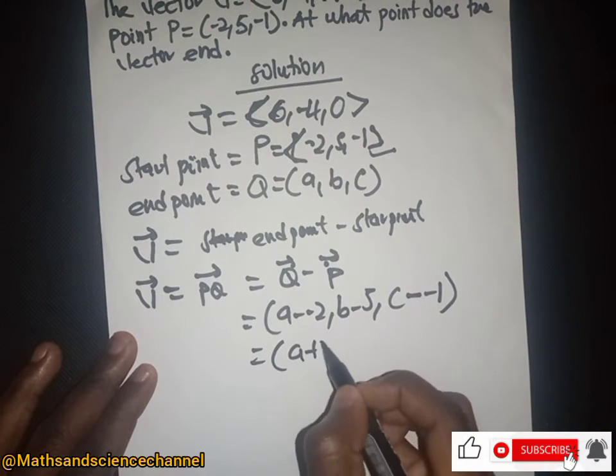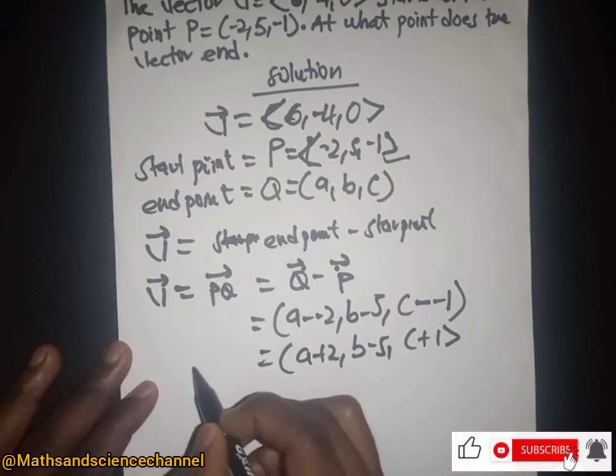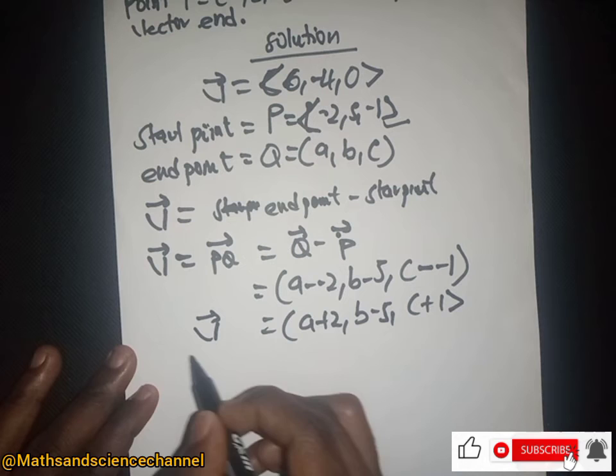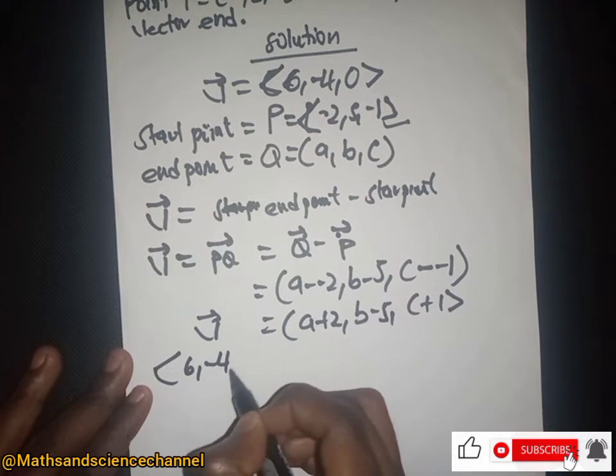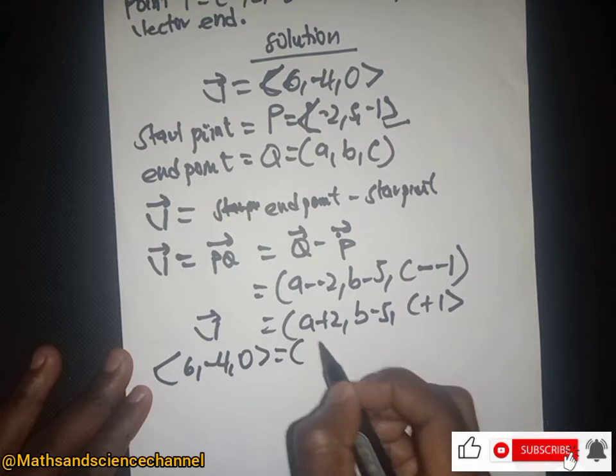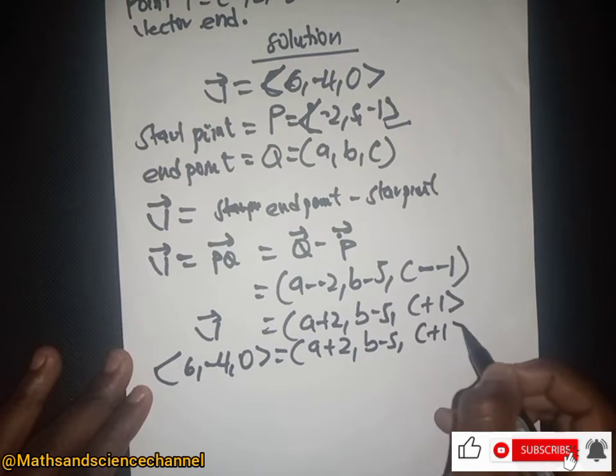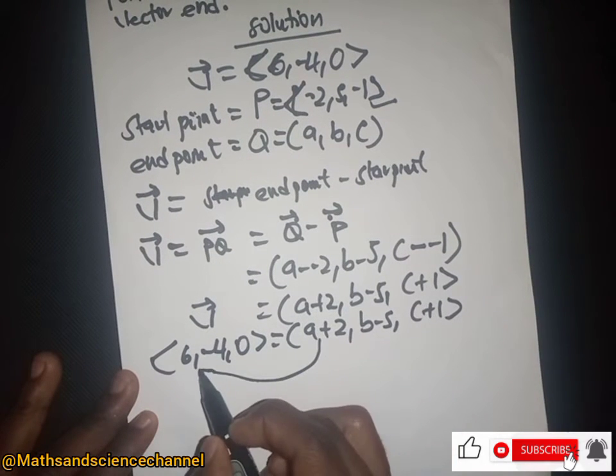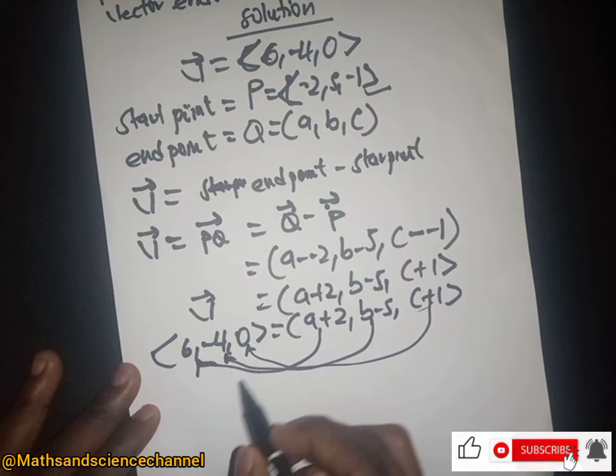This is equal to the vector, and we're given the general vector V as <6, -4, 0>. So what we are going to do now is to just equate each of the coordinates to each respective coordinate. So this will be equal to that, this equal to that, and this equal to that. So we have 6 being equal to a+2.